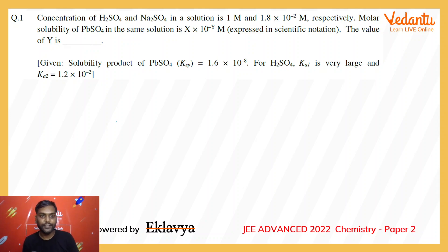Hello everyone, this is Rajiv and we are discussing Paper 2 of Chemistry of JEE Advanced 2022. The first question is: concentration of H2SO4 and Na2SO4 in a solution is 1 molar and 1.8 × 10^-2 molar respectively, and we have to find solubility of PbSO4 in this mixture which contains sulfuric acid and sodium sulfate.